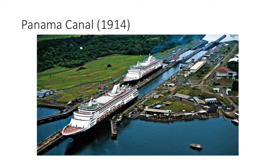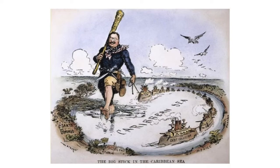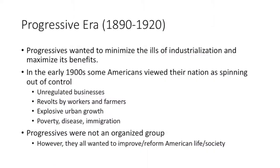Now you don't have to sail all the way around South America — you can cut right through Panama. The progressive era ran from 1890 to 1920. The good way to think of it is they're trying to fix all the problems of the previous era — the Gilded Age and industrialism. There were good things from industrialization that drastically improved the standard of living, but bad things as well, and the progressives wanted to fix those.